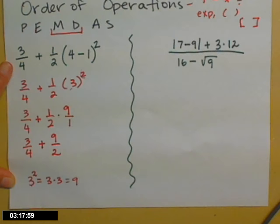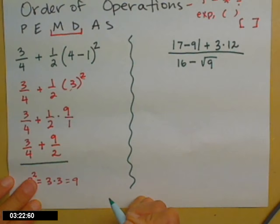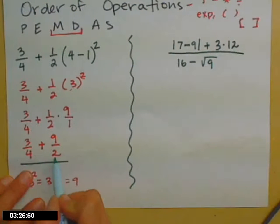So I'm going to grab a new color so you can tell what happens next. Now I have to add these two fractions. And we all know that if we add and subtract fractions, we need a common denominator. So you look at the 4 and you look at the 2. The common denominator is 4.